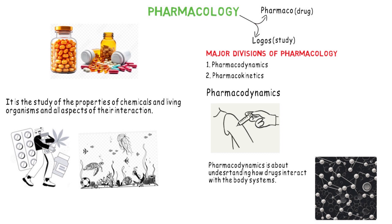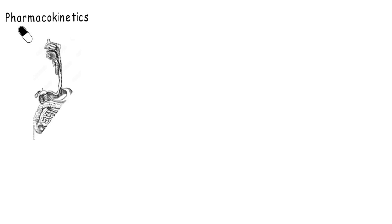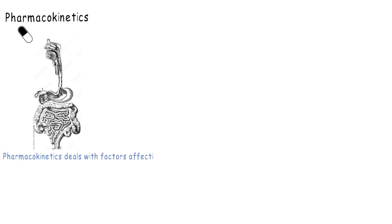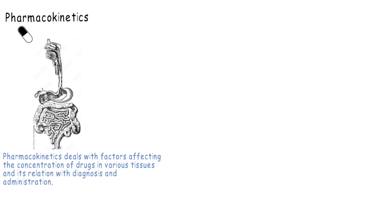Pharmacodynamics is basically about understanding how drugs interact with human systems. In pharmacokinetics, we see how drugs are absorbed, metabolized, and eliminated by the body. It also deals with the factors affecting the concentrations of drugs in various tissues and how that relates to dosages and administration of drugs.